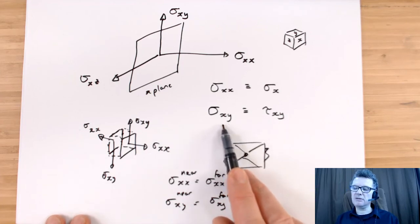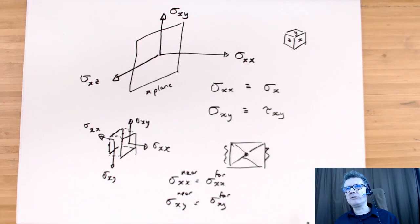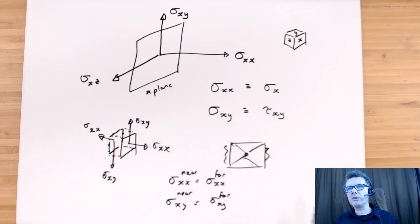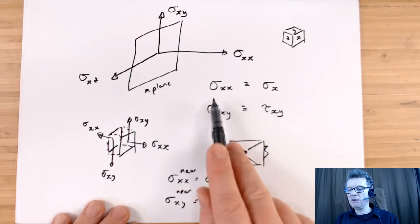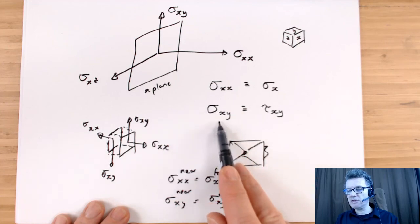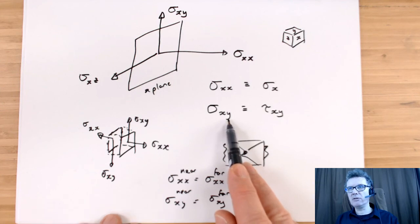And that's done, I think, because in particular in pure maths, they tend to look at things beyond three dimensions. So then it makes sense that your most right index is referring to the plane. But for us, in terms of engineering, and most of the engineering textbooks you'll come across, you'll find the first index is referring to the plane, and the second index is referring to the direction of the stress.